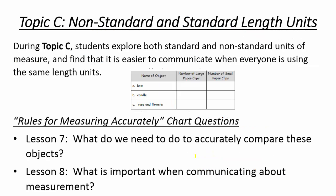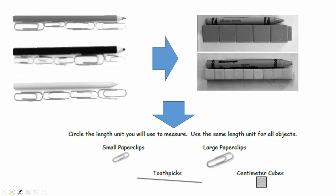Topic C expands on Topic B's ideas and talks about using non-standard units — and maybe why we can use them but why we shouldn't. It's easier to communicate when everyone is using the same unit lengths. An interesting conversation here is that the bigger the unit, the fewer you will need, which can cause some confusion, but it's a great discussion heading into second grade where students compare centimeters to inches. This rounds out your measurement anchor chart with eight really great essential questions that bring out eight key concepts.